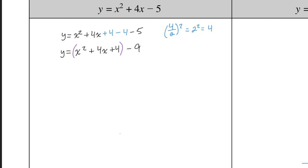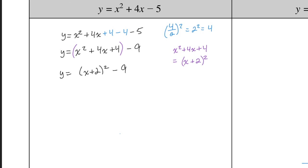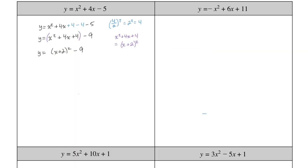The trinomial x squared plus 4x plus 4 — which we put brackets around — is our perfect square trinomial. Factoring it gives (x plus 2) squared. Bringing that back into the equation, we get y equals (x plus 2) squared minus 9. This equation is now converted into vertex form, and the next three practice problems are up to you.